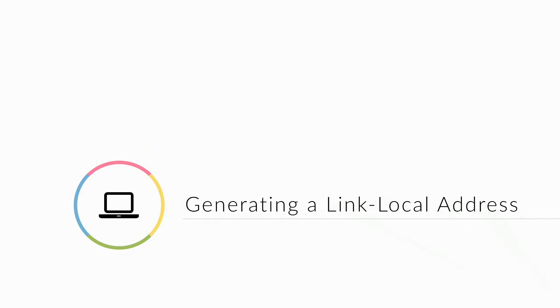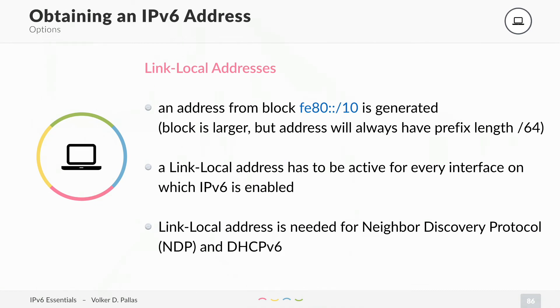Every interface has a link-local address. It doesn't matter if you have a globally routable public IPv6 address on your interface — every interface activated with IPv6 has to have a link-local address. The link-local address comes from the block fe80::/10 and is automatically generated once the interface comes up and is IPv6 enabled. You can also set this manually, but most of the time people use the automatic configuration.